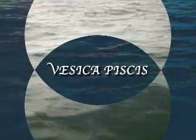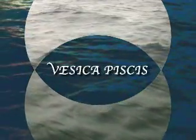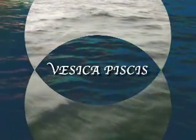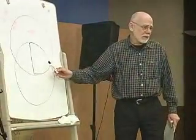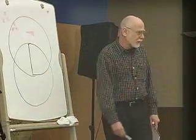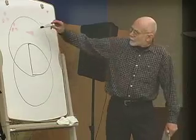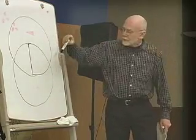That's called the Vesica Pisces — or the Vesica Pisces, depending on what you prefer. The Vesica Pisces is literally the womb of the universe. This is the whole essence of the universe. Two circles of common radius and this shape in the middle — the Vesica Pisces — is the whole root of sacred geometry.